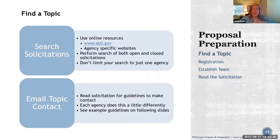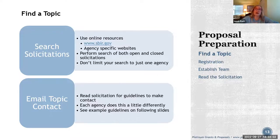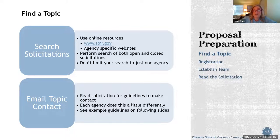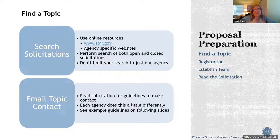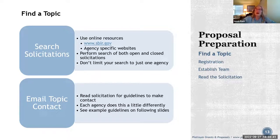To search solicitations, go to SBIR.gov where you can search open solicitations, or go directly to the specific agency websites. I look at both open and closed solicitations — if I can't find anything open, I look at past solicitations to see if that type of research has been funded before and find a contact name. Don't limit your search to one agency — a client of mine submitted to USDA, NSF, and NIH simultaneously. Make sure you look at all agencies for maximum opportunities.